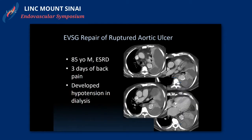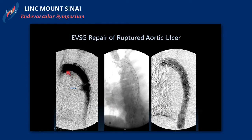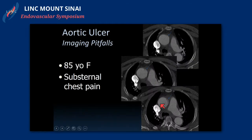Case two: an 85-year-old with end-stage renal disease and three days of back pain who developed acute-onset hypotension during dialysis. CT scan showed fresh blood — this patient had ruptured their penetrating aortic ulcer — requiring urgent emergent stent graft repair. The angiogram showed the outpouching clearly, and we were able to place one stent graft piece; the patient did quite well after that.